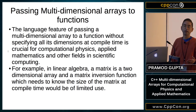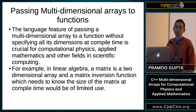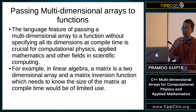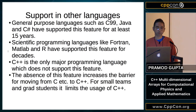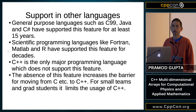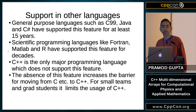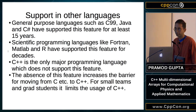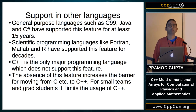Passing multi-dimensional arrays to functions is critical for computational physics, applied math, and scientific computing. In linear algebra, a matrix is a two-dimensional array, and a matrix inversion function that needs to know the size of each dimension at compile time is of limited use. Other languages have supported this feature for decades — C99, Java, C#, and scientific languages like Fortran, MATLAB, and R.